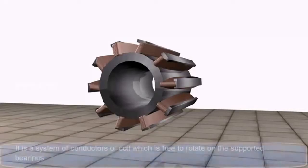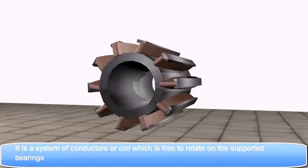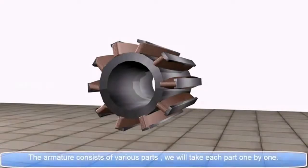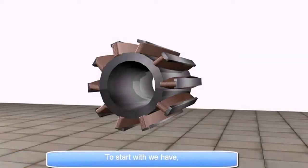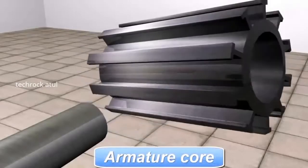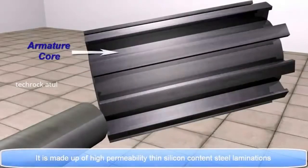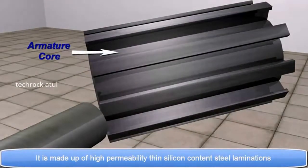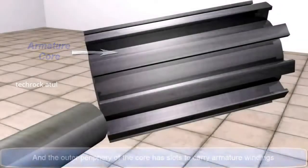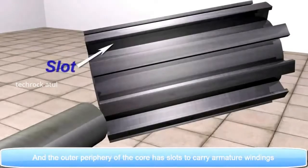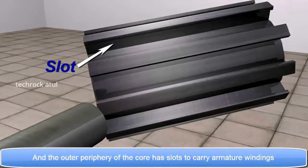Armature. It is a system of conductors or coil which is free to rotate on the supported bearings. The armature consists of various parts. We will take each part one by one. To start with we have armature core. It is made up of high permeability thin silicon content steel laminations. And the outer periphery of the core has slots to carry armature windings.